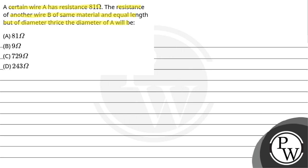Option A: 81 ohm, option B: 9 ohm, option C: 729 ohm, and option D: 243 ohm.